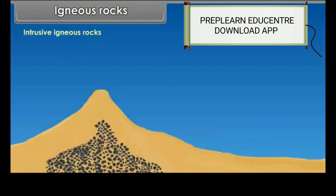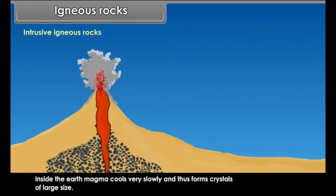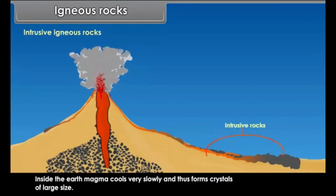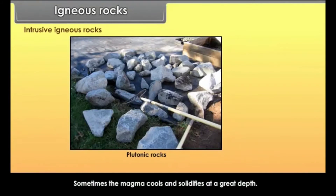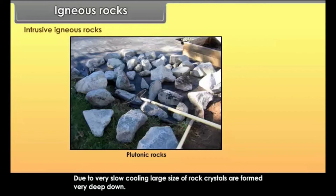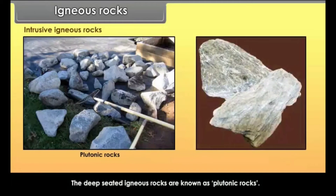Intrusive rocks are formed by the solidification of magma below the surface of the Earth in cracks or joints. Inside the Earth, magma cools very slowly and thus forms crystals of large size. Granite and dolerite are the most common examples of such rocks. Sometimes magma cools and solidifies at great depth; due to very slow cooling, large rock crystals form deep down. These deep-seated igneous rocks are known as plutonic rocks.